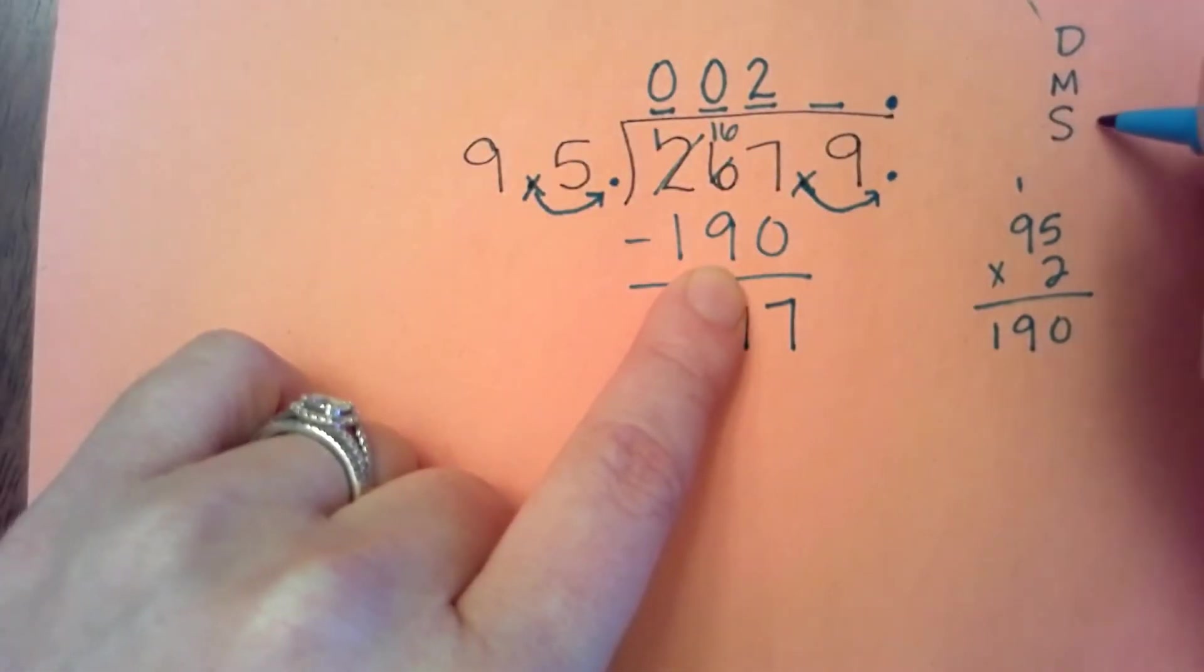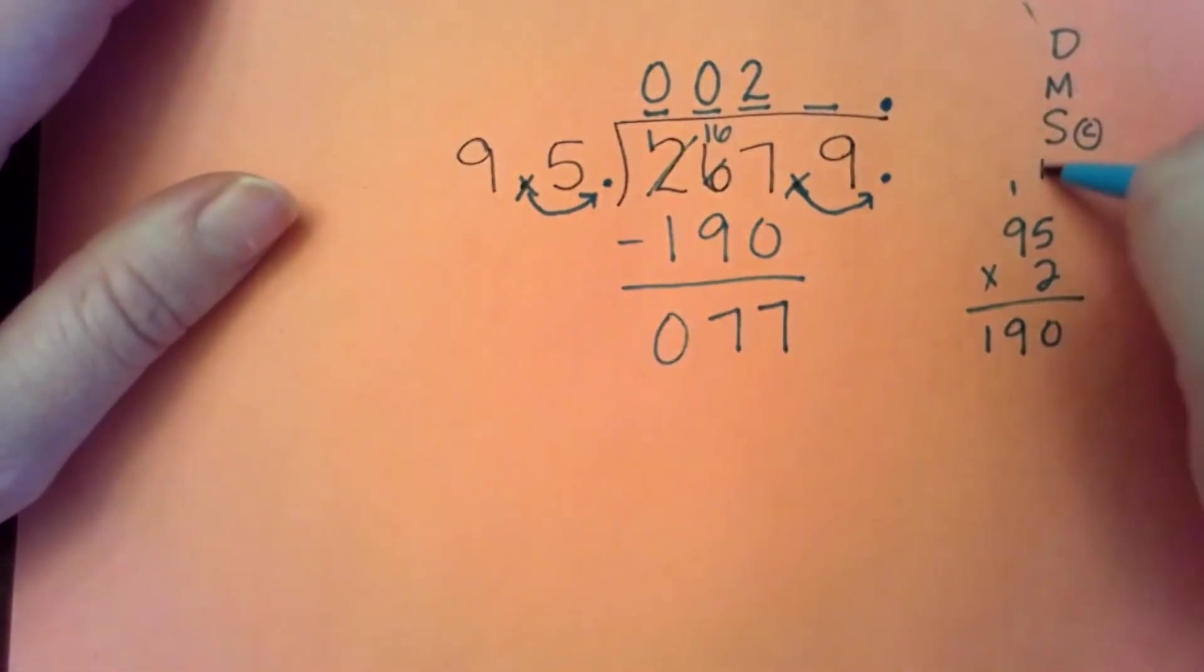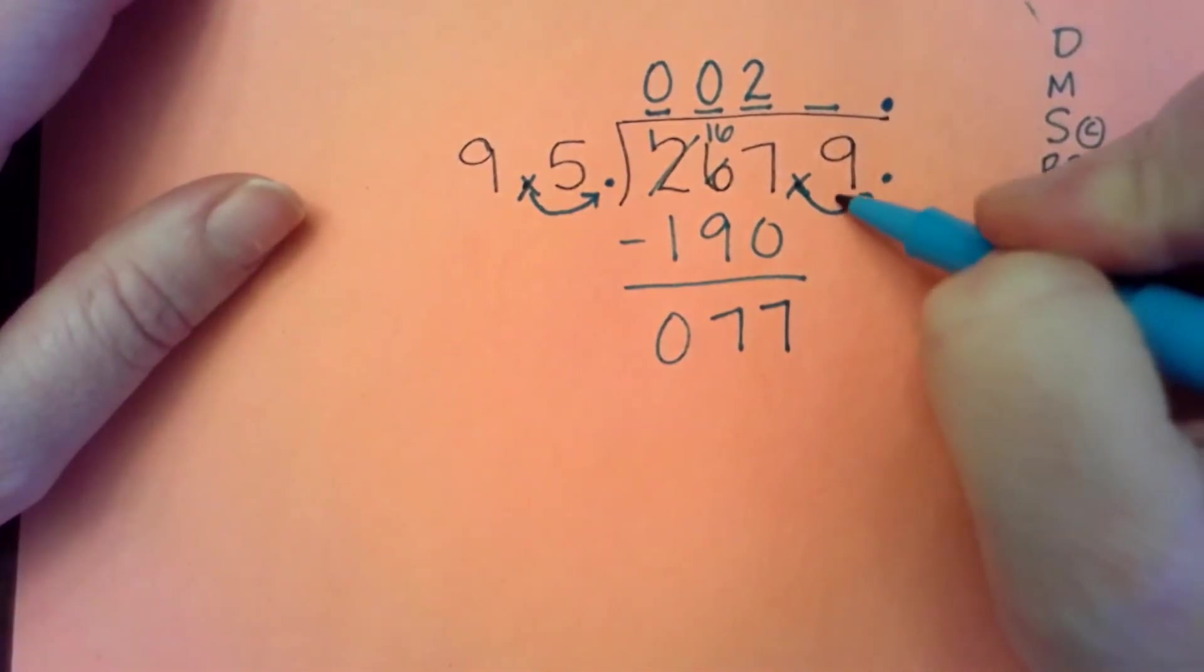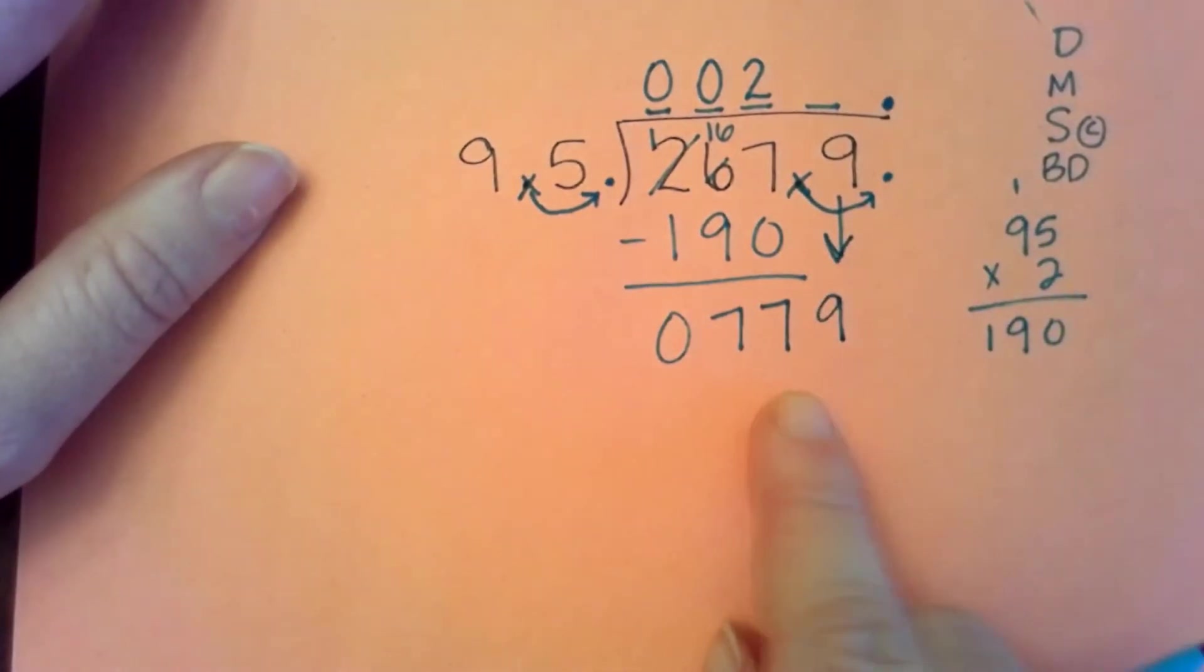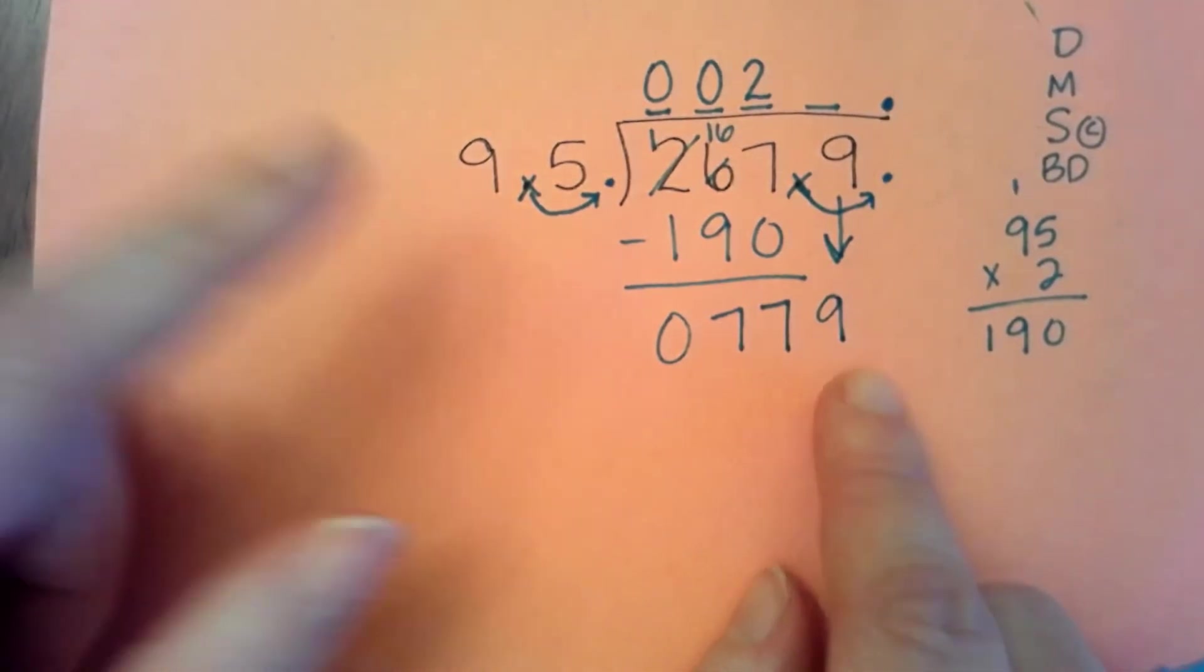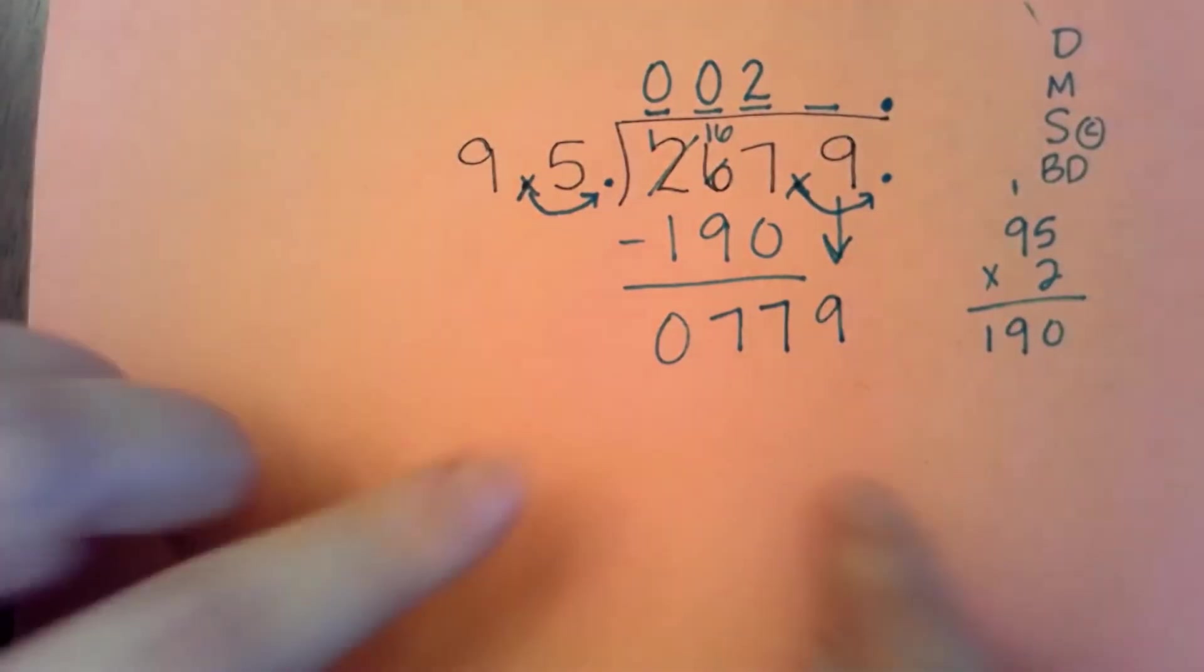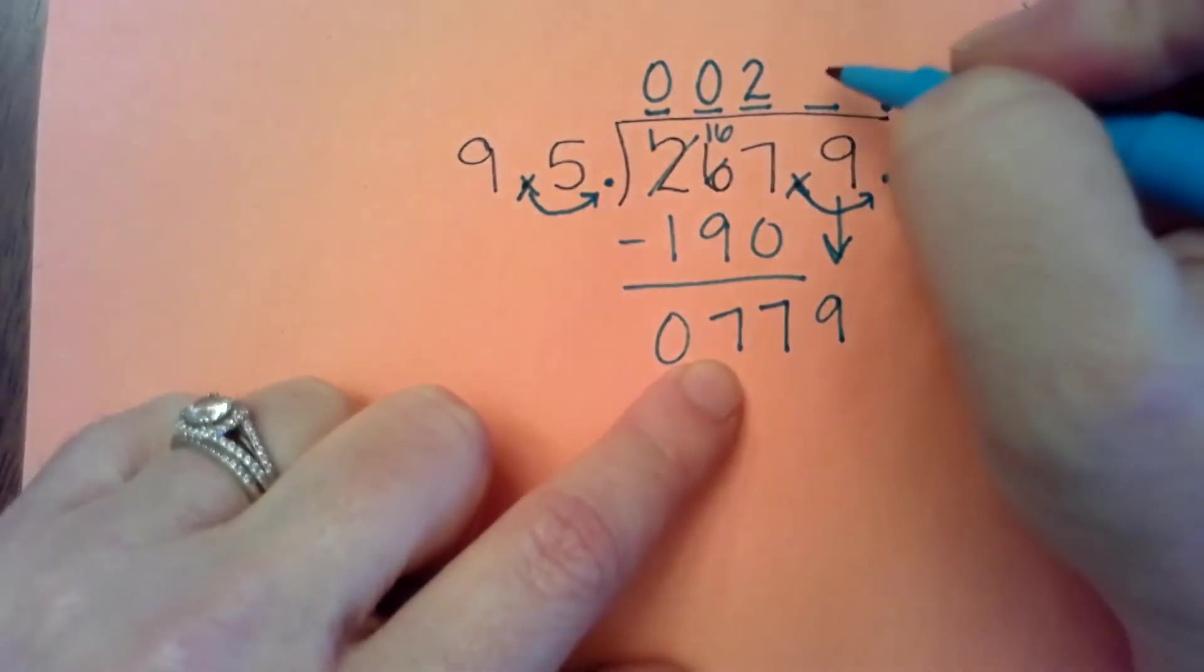I know that my multiplication to get 190, I've done that. I then subtracted. I did that secret compare step to make sure that that was a good choice. And now I'm going to bring down this 9. I have 779. I'm asking myself, what's a reasonable number of times or of groups of 95 that I could get from this? I'm thinking 8.